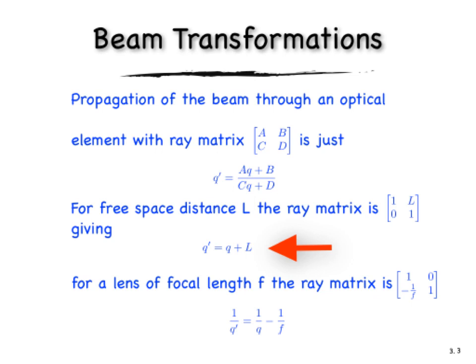The ones that are particularly relevant for us are a free space of a distance L, and for that, the Gaussian beam before propagating a distance L is related to the beam after, or at least its Q parameter is related by the old Q parameter plus L gives us the new parameter.